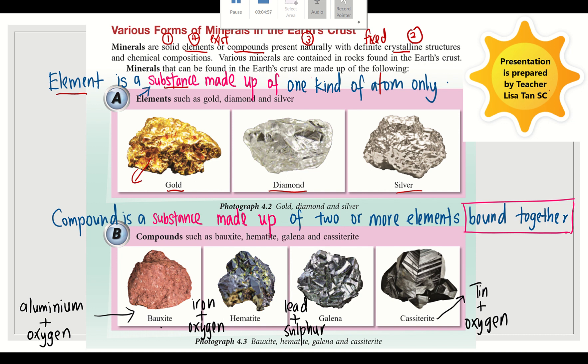The mineral also can be found in the form of compounds. Compound is a substance made up of two or more elements. They are bound together chemically. For example, bauxite, hematite, galena, and cassiterite. Bauxite is made up of aluminum and oxygen. We can find these two elements in the bauxite.